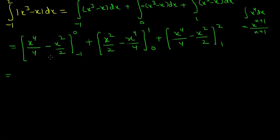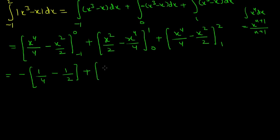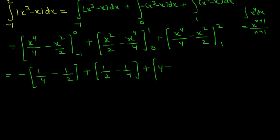Now plug in the limits. The upper limit gives 0; subtracting the lower limit: minus 1 to the power 4 is 1, so 1 by 4, and minus 1 squared is 1, so minus 1 by 2. Then minus 1 by 4, and the 0 to 1 part gives 1 by 2 minus 1 by 4. For the 1 to 2 part: 2 to the power 4 is 16, so 16 by 4 is 4; 2 squared is 4, so 4 minus 2 equals 2. Minus the lower limit: 1 by 4 minus 1 by 2.